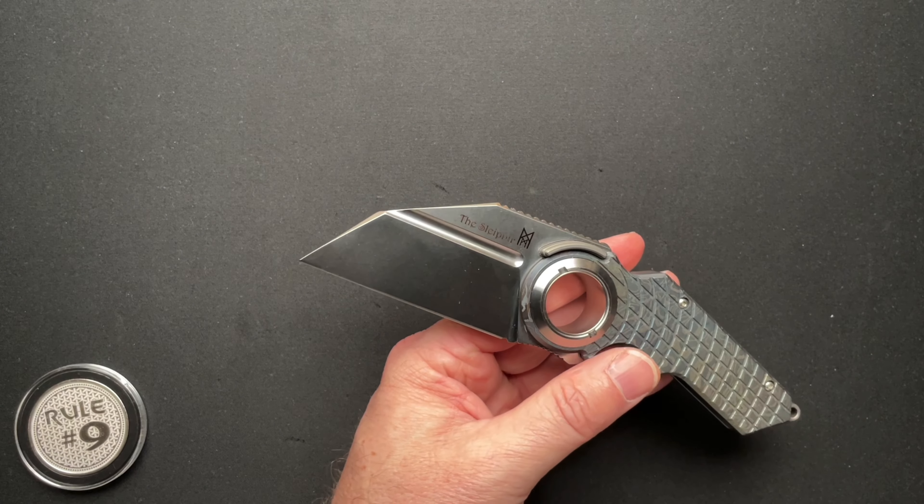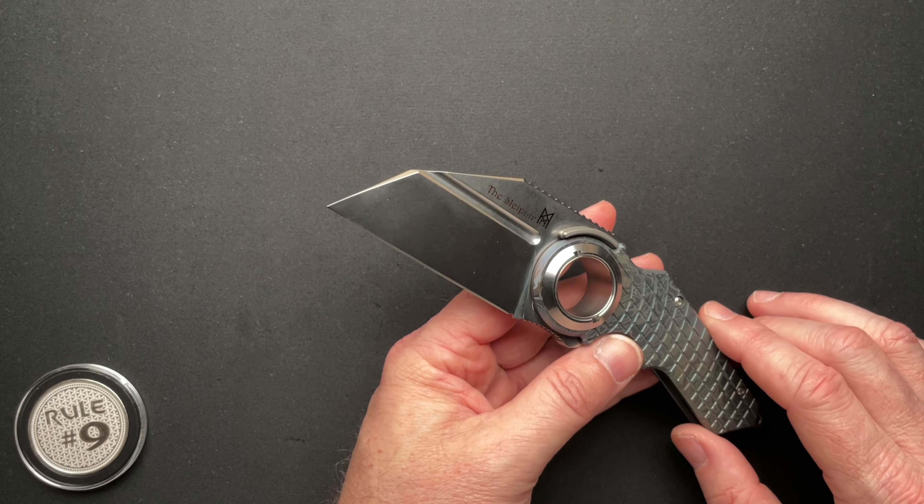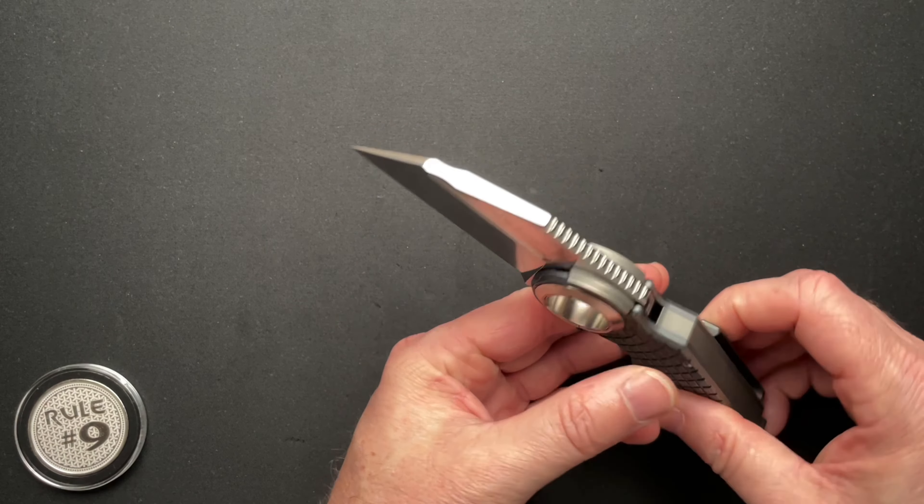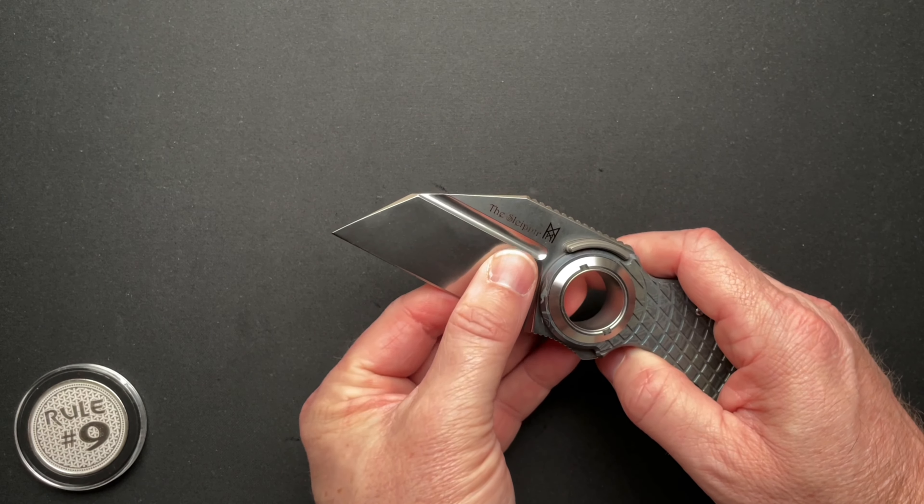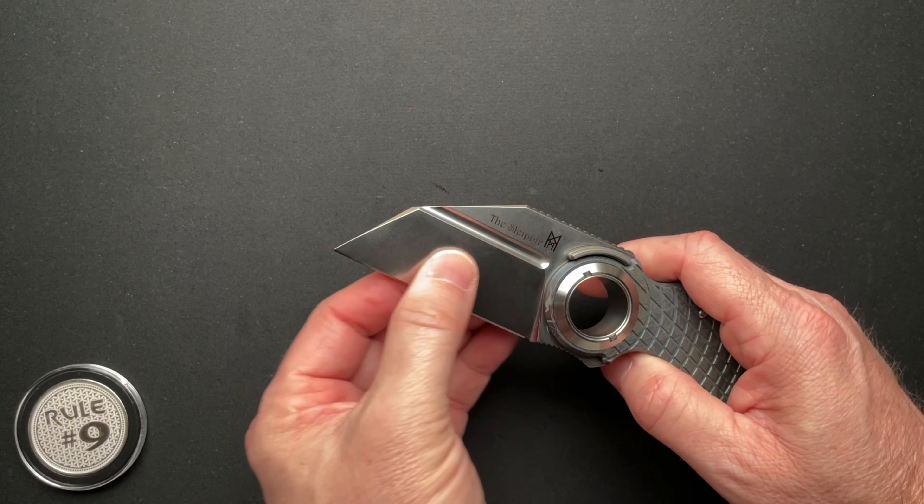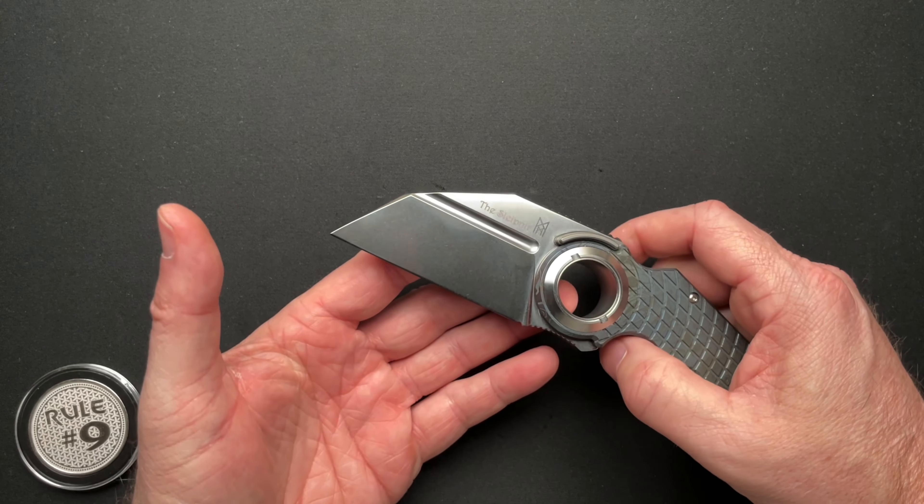Behind the edge for such a thick blade is crazy at 0.016 with a blade thickness of 0.235. So that's a crazy flat grind all the way down to like nothing. So that is pretty impressive.